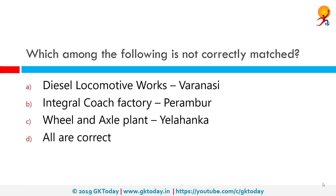Which among the following is not correctly matched? In the given options, all are correctly matched. The Diesel Locomotive Works is in Varanasi, a production unit owned by Indian Railways that manufactures diesel electric locomotives and spare parts. Integral Coach Factory is a manufacturer of rail coaches located in Perambur near Chennai, Tamil Nadu. Rail Wheel Factory is a manufacturing unit of Indian Railways producing wheels, axles and wheel sets of railroad wagons, coaches and locomotives, situated at Yelahanka in Bangalore, Karnataka.